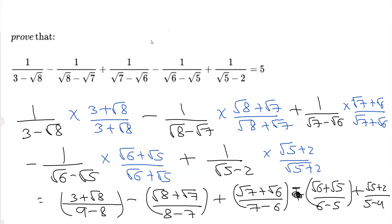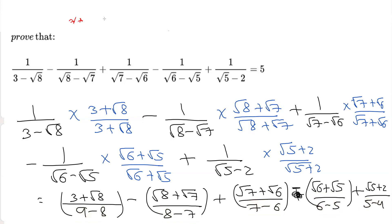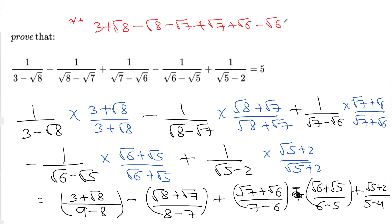Looking at all the results: everywhere the denominator is 1, and any number divided by 1 is the number itself. So we simply write the numerators. The first gives 3 plus root 8. Then minus, so opening the bracket gives minus root 8 minus root 7. Opening the next bracket gives root 7 plus root 6. Opening the next gives minus root 6 minus root 5. And the last gives positive root 5 plus 2.